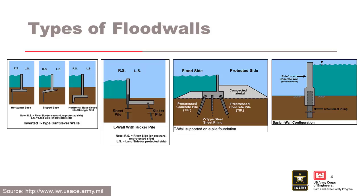T-walls are the most prevalent type, named for the obvious reason. We all design T-walls for retaining walls in undergraduate engineering classes. There are horizontal flat and keyed-base T-walls with and without sheet pile cutoffs, as well as deep foundation pile-supported T-walls — Southeast Louisiana has thousands of them. There are also L-walls; all these walls look the same at the surface, appearing as a cantilevered wall sticking out of the ground.